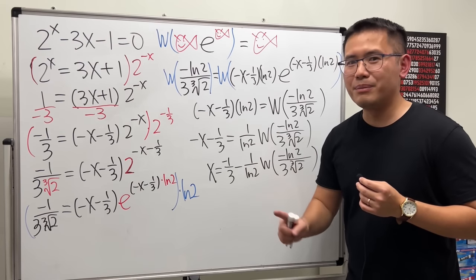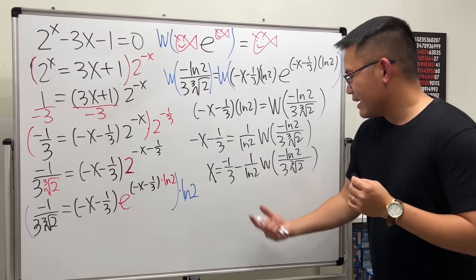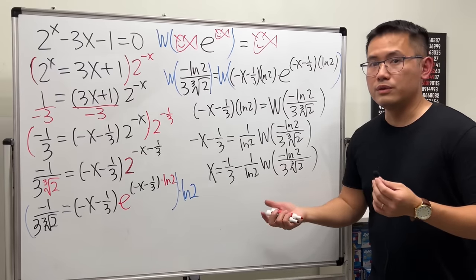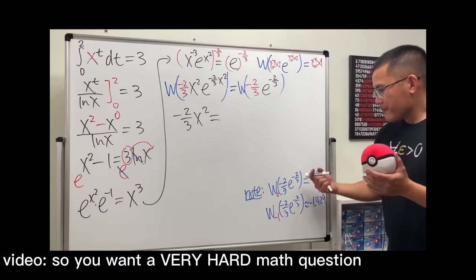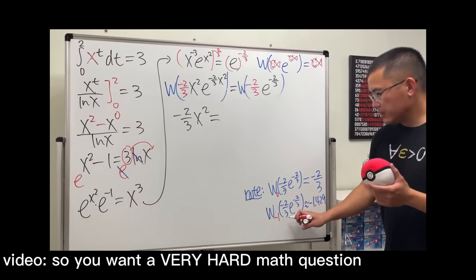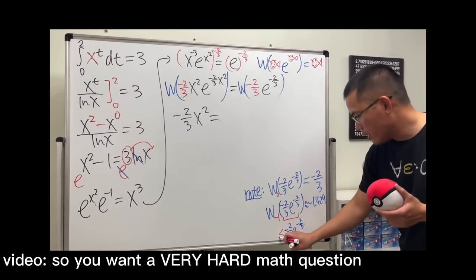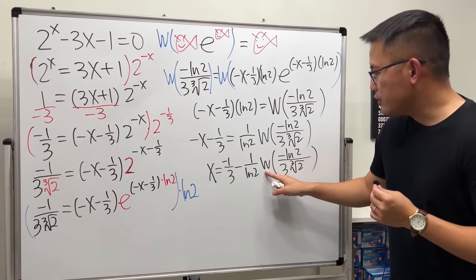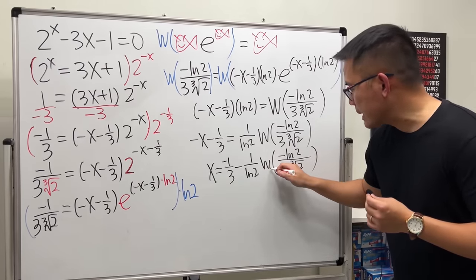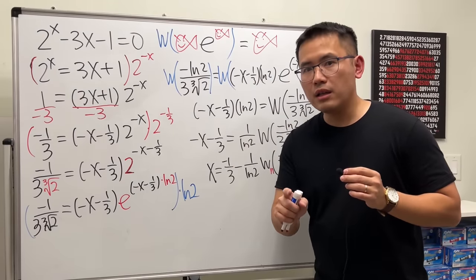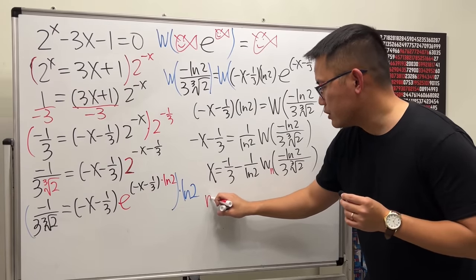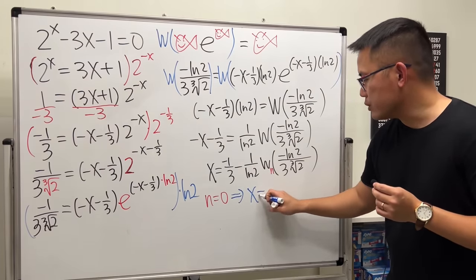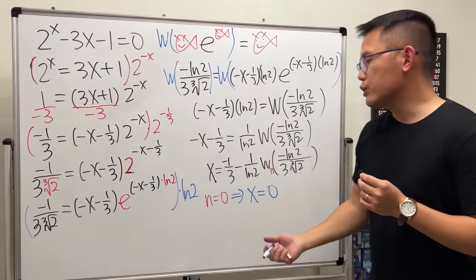The Lambert W function is a multi-valued function. Even in the real numbers it gives different results depending on the branch. The input here is between −1/e and 0, which means there are two real answers. We write W with a subscript n for the branch. When you enter product log into Wolfram Alpha by default you get the principal branch, n = 0, which gives x = 0.